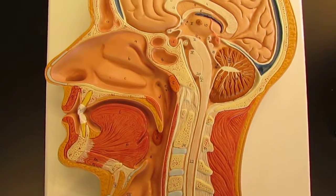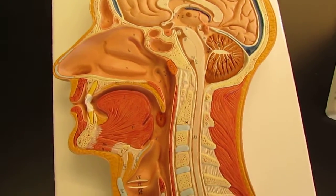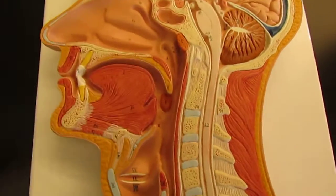This is the lymphatic system. We will be looking at only a few of the structures of the lymphatic system starting on this mid-sagittal model right here.